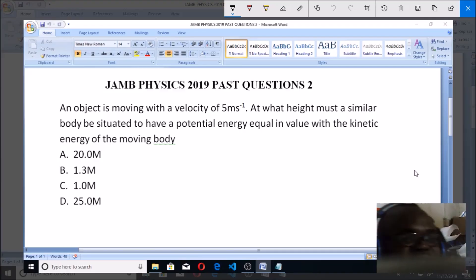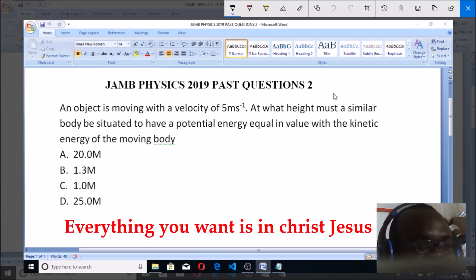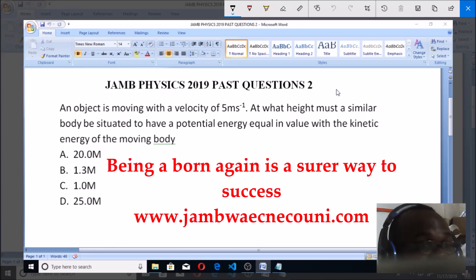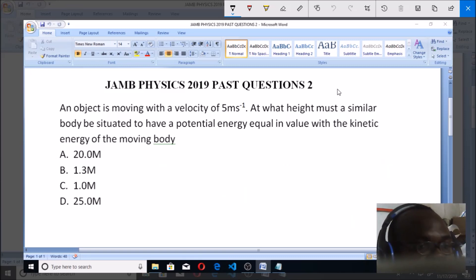Welcome! Let's look at this JAMB Physics 2019 past question number two. An object is moving with a velocity of 5 meters per second. At what height must a similar body be situated to have a potential energy equal in value with the kinetic energy of the moving body?